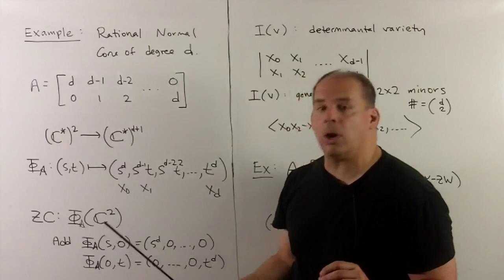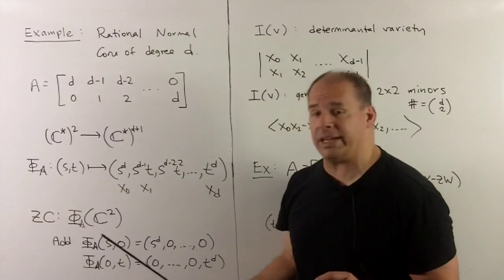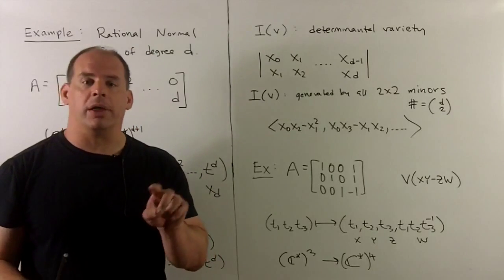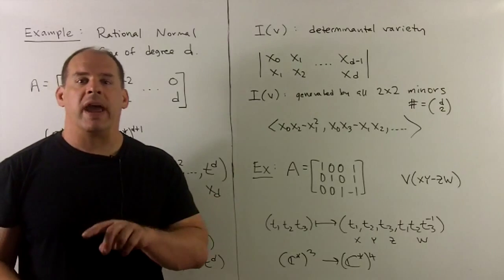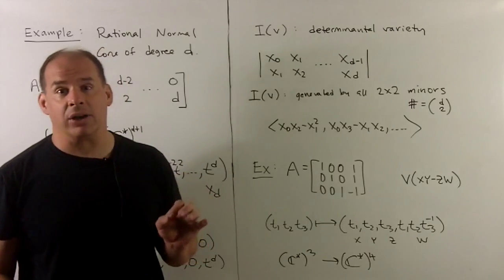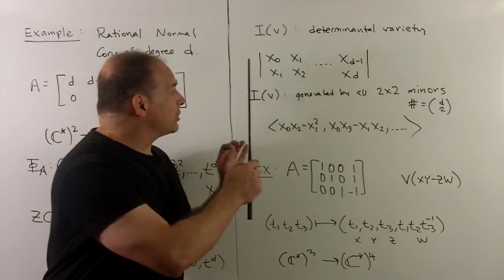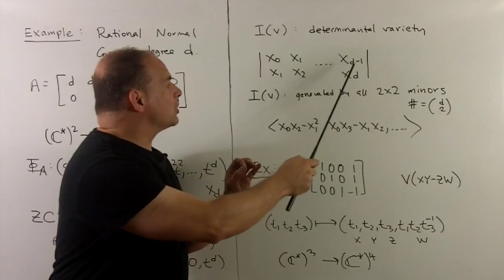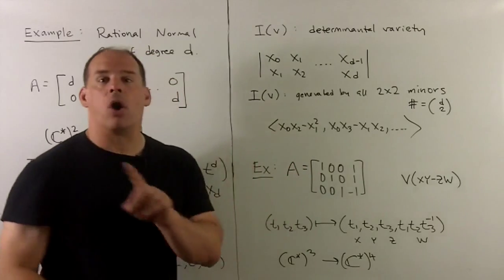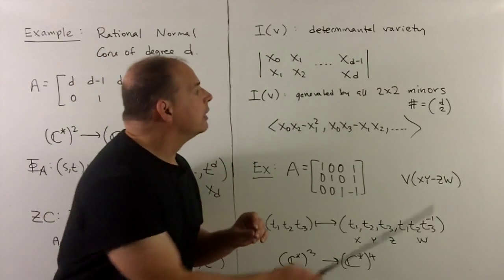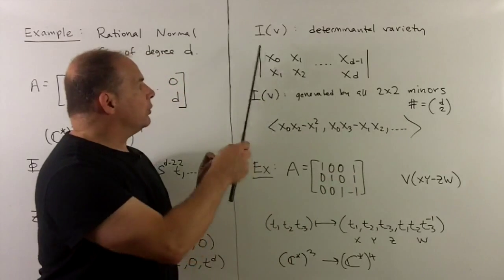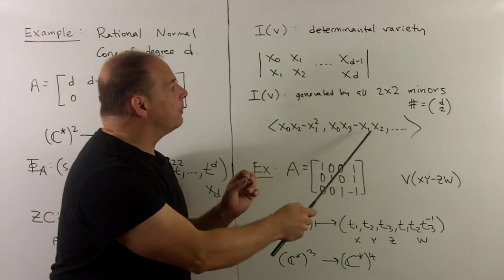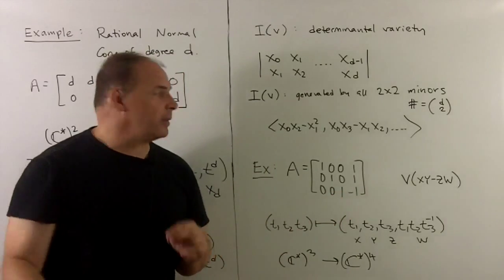We only need to add two pieces to get all of the rational normal cone: φ_A on (S,0) where S is any complex number, and φ_A on (0,T) where T is any complex number. The rational normal cones fall into a special class called determinantal varieties — we take a matrix and compute determinants of minors. Here we take 2×2 minors of a matrix with first row X₀, X₁, …, X_{D−1} and second row X₁, …, X_D, giving D-choose-2 polynomials. For example, the first gives X₀X₂ − X₁², the next gives X₀X₃ − X₁X₂, and so on; you can check these vanish using the coordinates from the characters.